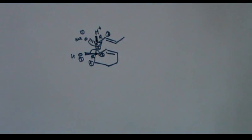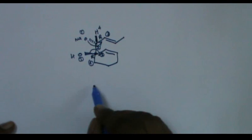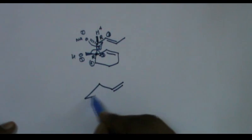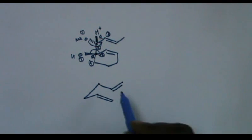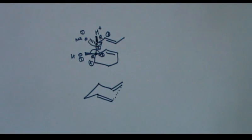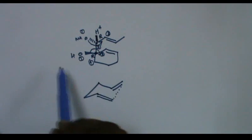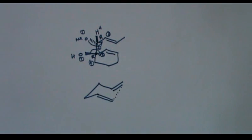Now, you may know that the cope rearrangement goes through a cyclic chair conformation transition state. Now, I have to place the groups in that so that the stereochemistry of this carbon and this carbon is same as it is in the starting material.